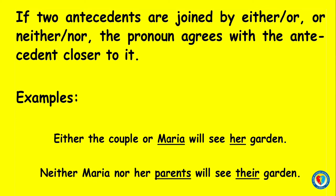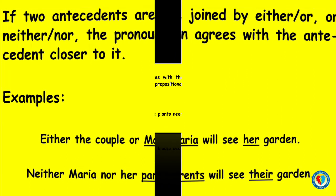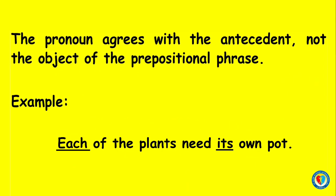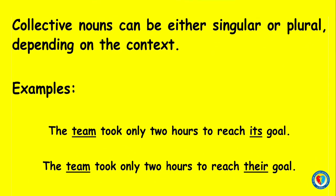Examples: 'Either the couple or Maria will see her garden.' 'Neither Maria nor her parents will see their garden.' The pronoun agrees with the antecedent, not the object of the prepositional phrase. Example: 'Each of the plants needs its own pot.' Collective nouns can be either singular or plural depending on the context. 'The team took only two hours to reach its goal' emphasizes the singularity of the team, while 'The team took only two hours to reach their goal' emphasizes the team as a group of individuals.